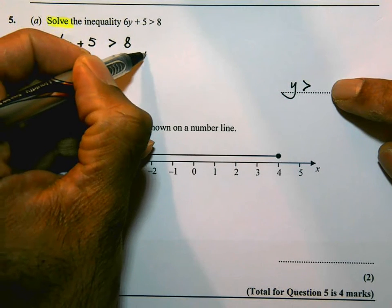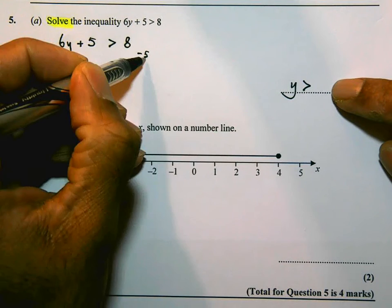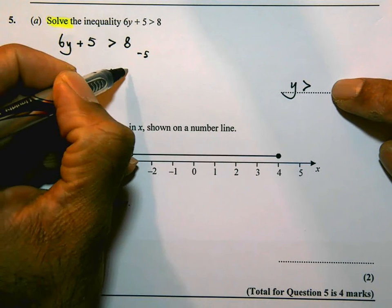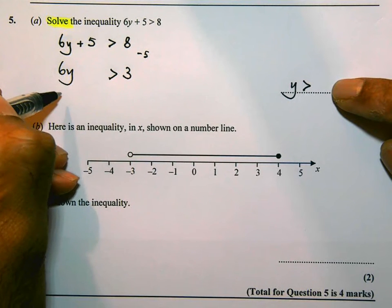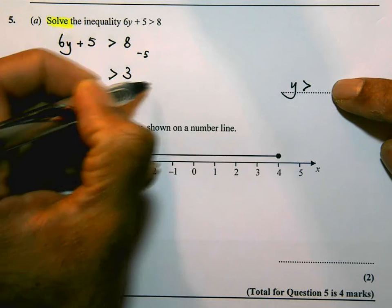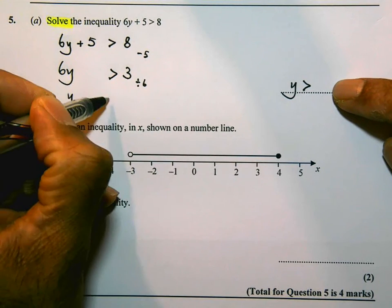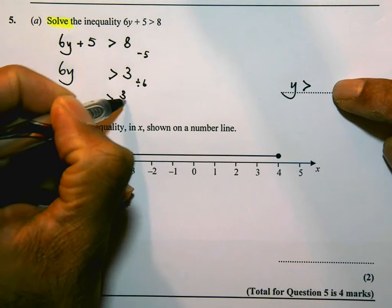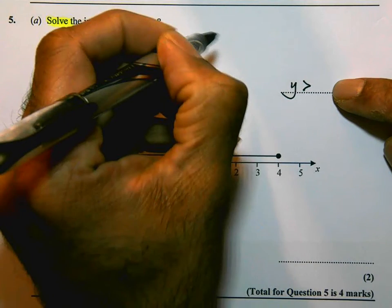Now I need to get rid of that 6. To get rid of that 6, I need to divide by 6. So I'm going to get y is greater than 3 divided by 6. Now 3 over 6 is the same as, if you think about it, 3 over 6 is the same as a half or 0.5. So I could put that in my answer space, 3 over 6.